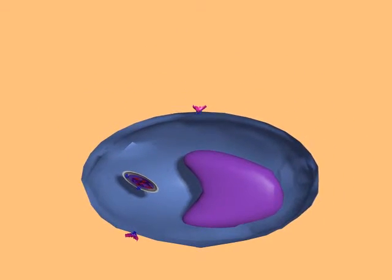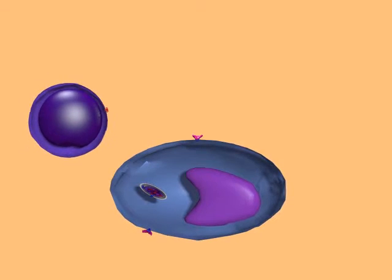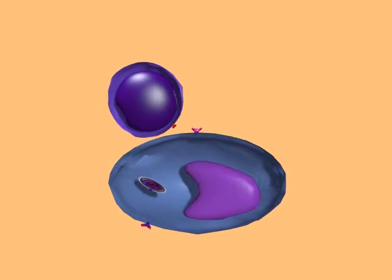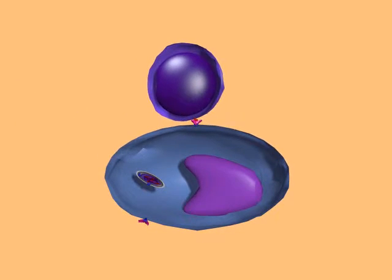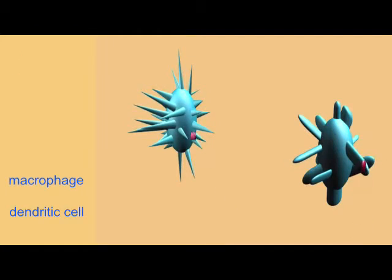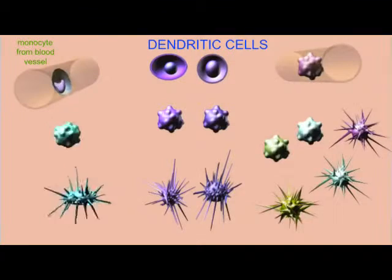The antigen-presenting cell can stimulate the T-helper cell with interleukin. Thus, the T-helper cell is now activated, and it can then activate other components of the immune system, such as the B-lymphocytes and cytotoxic T-cells.